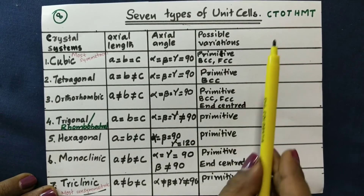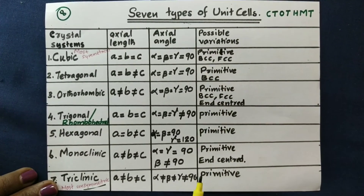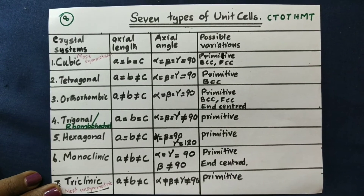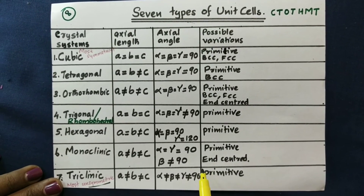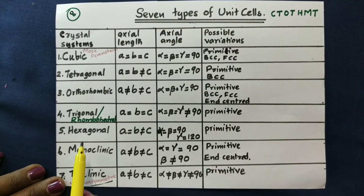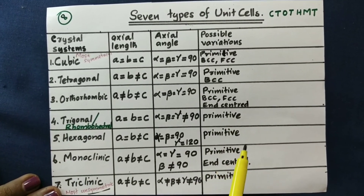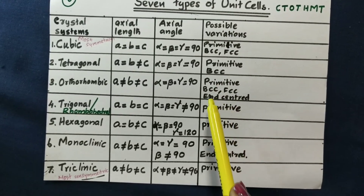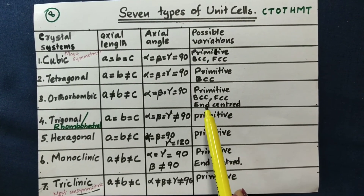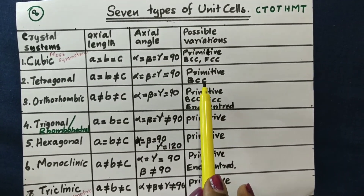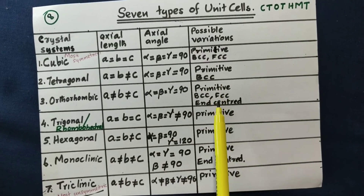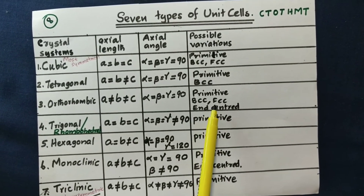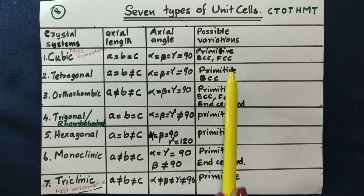There is one type of primitive cell. Monoclinic and orthorhombic each have 2, and these include BCC and FCC. When we study these variations, they are primitive, BCC, and FCC. BCC is 3 and FCC is 2 in the count.